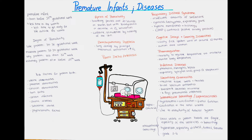Respiratory distress syndrome is a disorder where the preterm infant does not have sufficient surfactant in its lungs. Surfactant is a fluid that helps keep small air sacs from collapsing. If the air sacs are collapsed, they don't allow as much oxygen to enter and oxygenate the blood. The signs in these patients are cyanosis — bluish discoloration of either the limbs or the lips — fast breathing called tachypnea, flaring nostrils, and an expiratory grunt. On a histology test of the lungs, something called hyaline membranes may be seen.